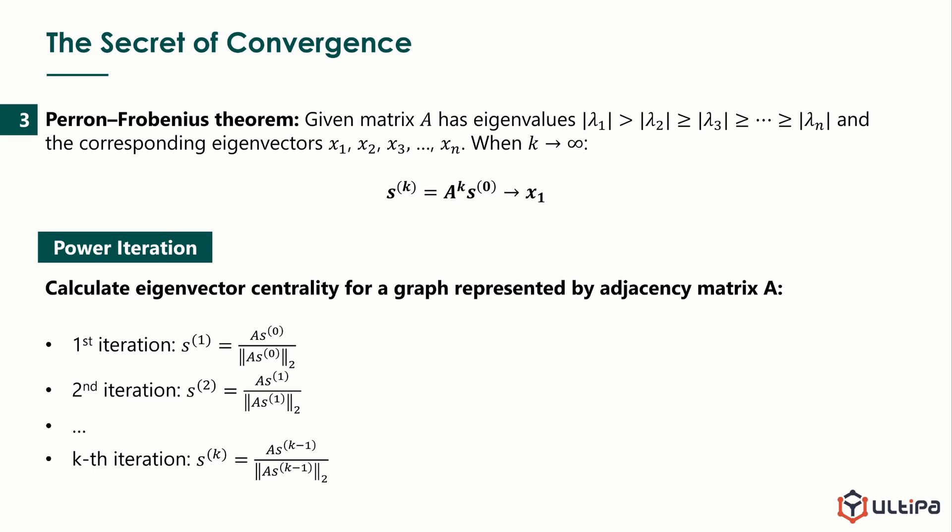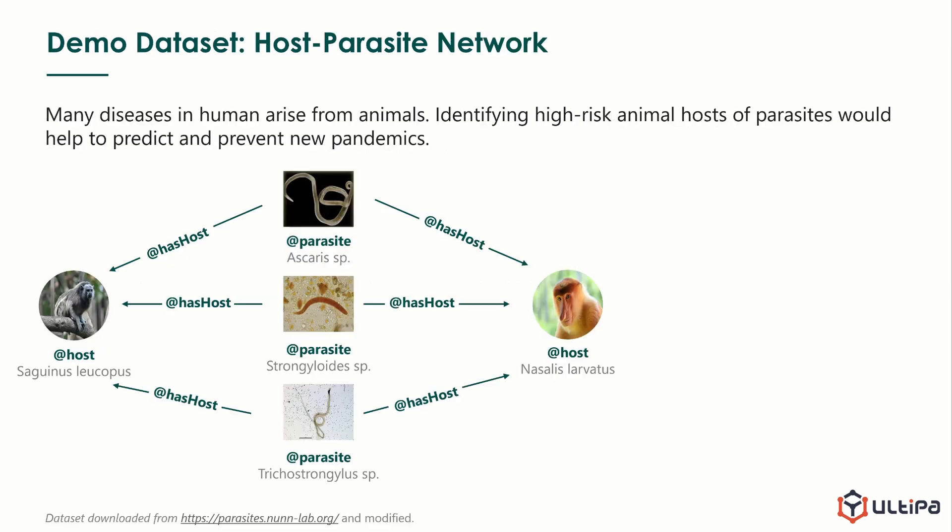We will use a host-parasite network to run the demo for eigenvector centrality. Host-parasite network is used in the research of infectious diseases. Many diseases in humans arise from animals. Identifying high-risk animal hosts of parasites would help to predict and prevent new pandemics. In the network, each host has multiple parasites, and each parasite lives on multiple hosts. Parasites could be passed from one host to another through ways of close contact or indirect contact.